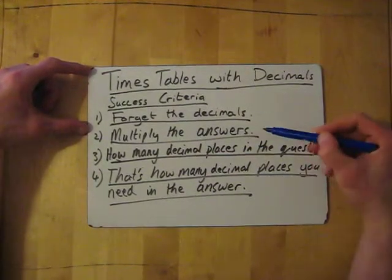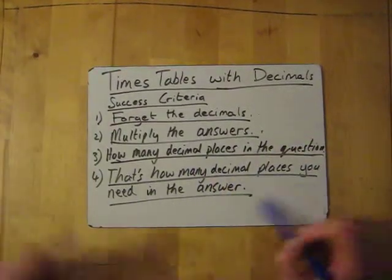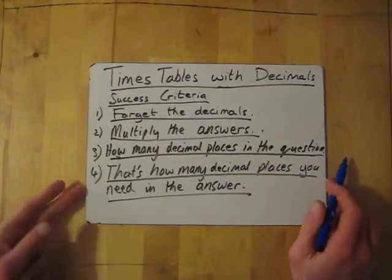So forget the decimals, do the multiplication, how many decimal places in the question, and then that's how many decimal places you're going to need for your answer. Let's have a go at a couple.